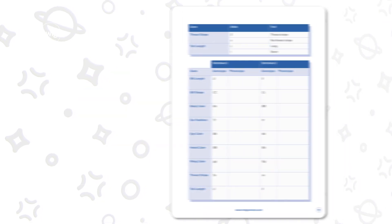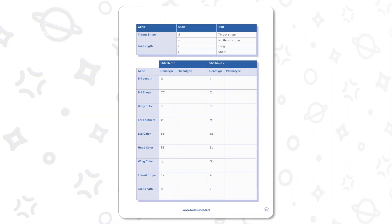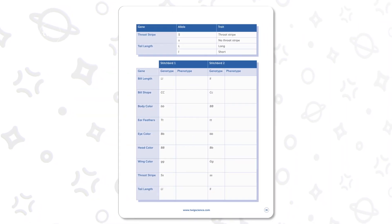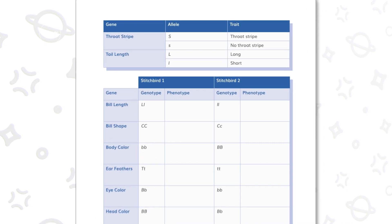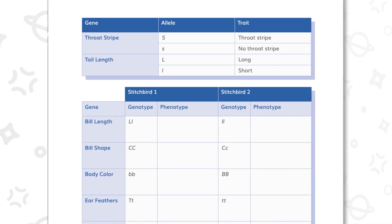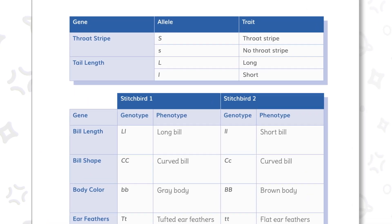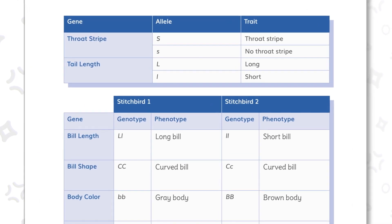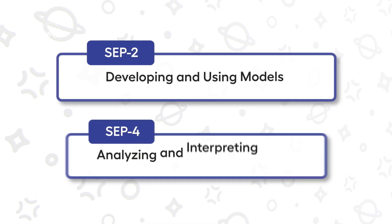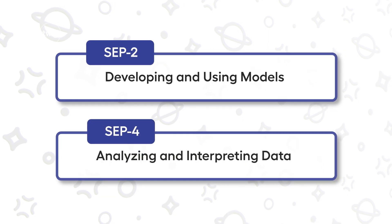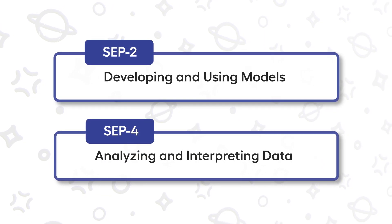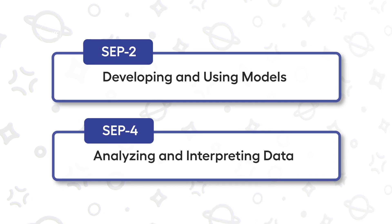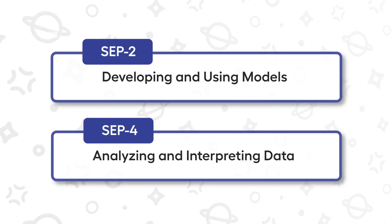In session 5, as students apply their developing understanding of genes, chromosomes, and alleles, and bridge to the concepts of genotype and phenotype, students then combine two science and engineering practices: developing and using models, and analyzing and interpreting data.